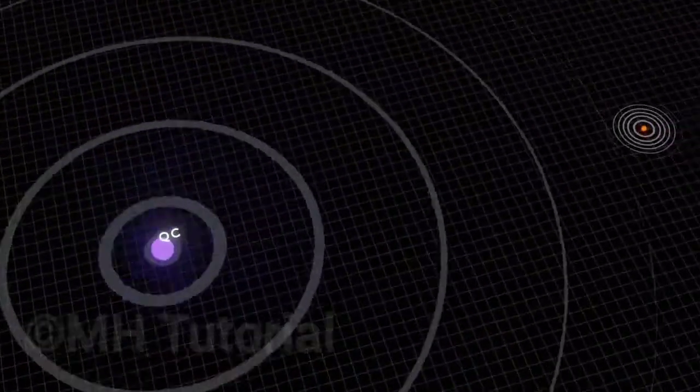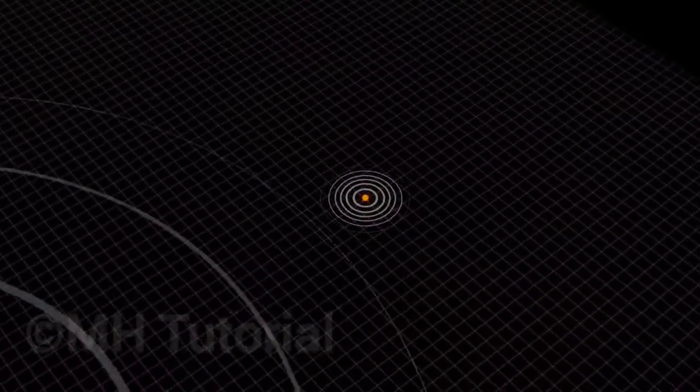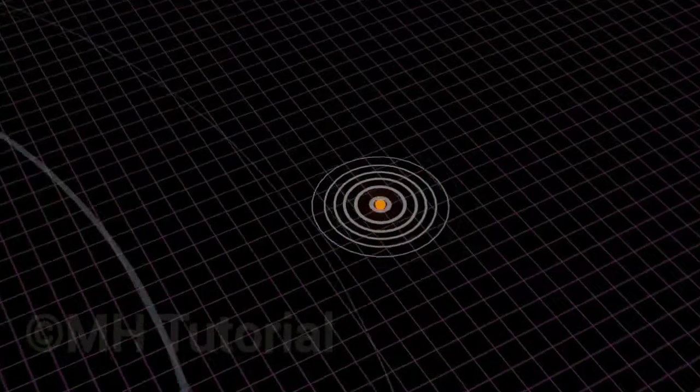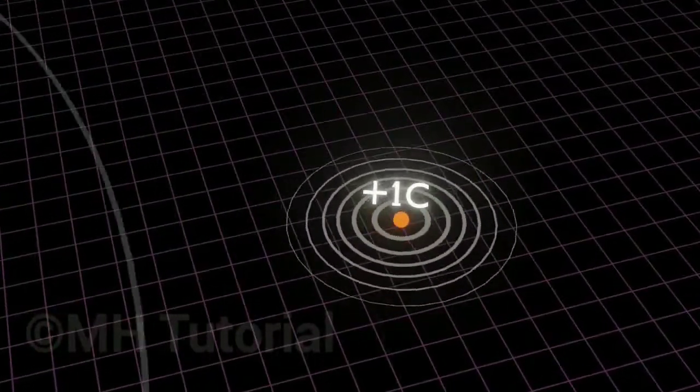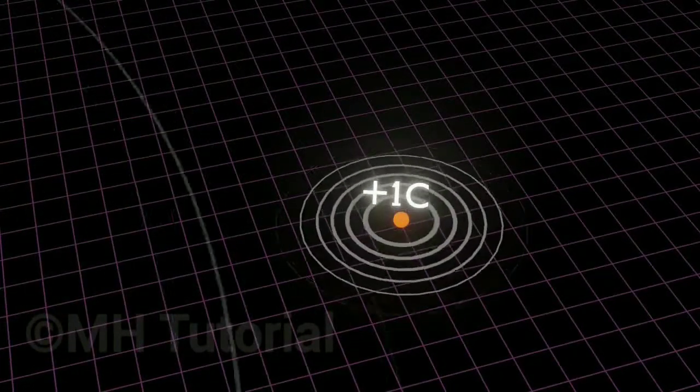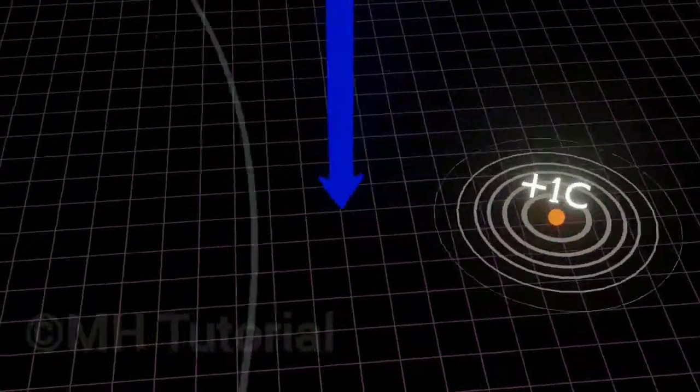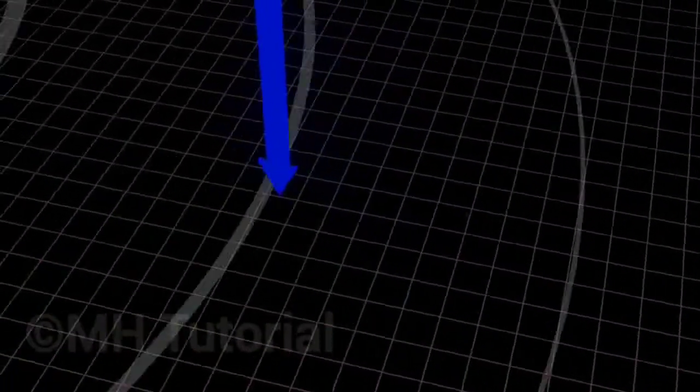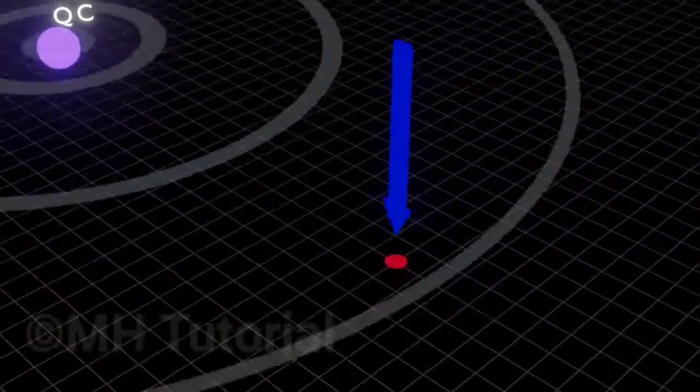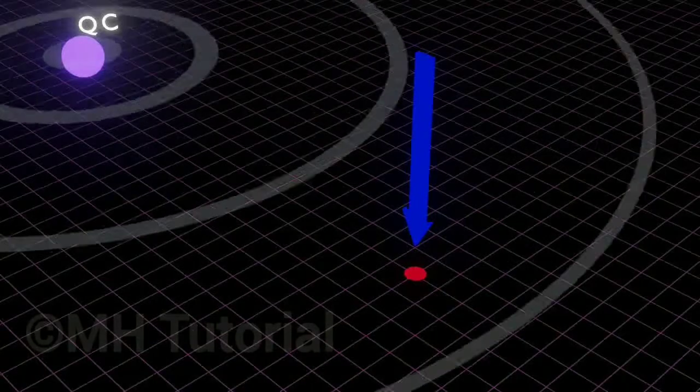Now if you have a point particle carrying an electrical charge of plus 1 Coulomb far away from the huge charge Q, and you wish to place it at a nearby point—suppose at that particular red point—then what do you need to do?